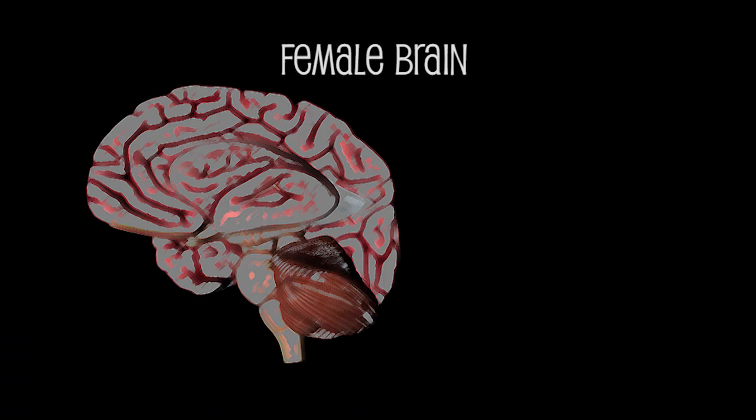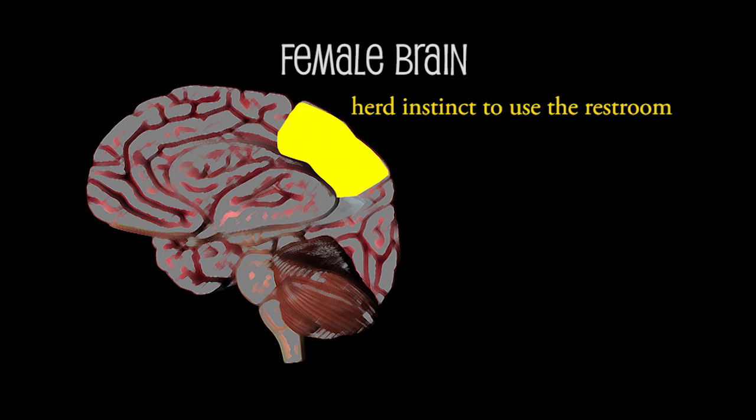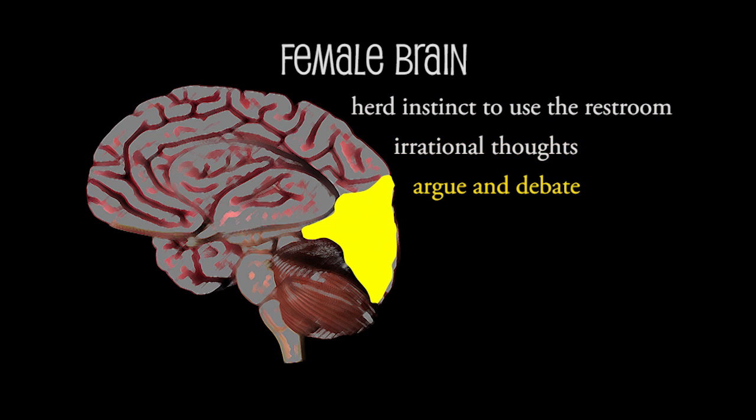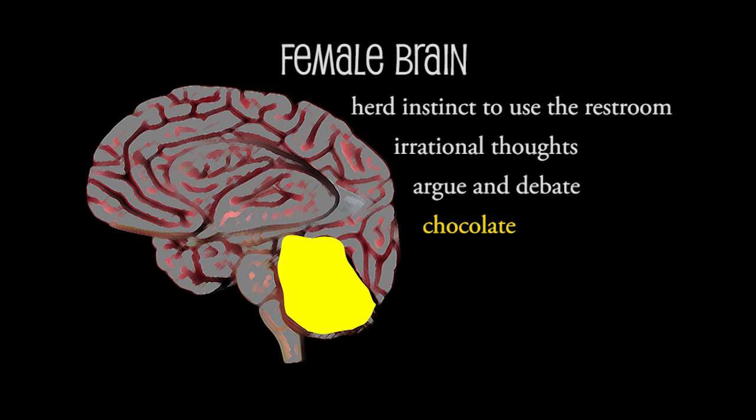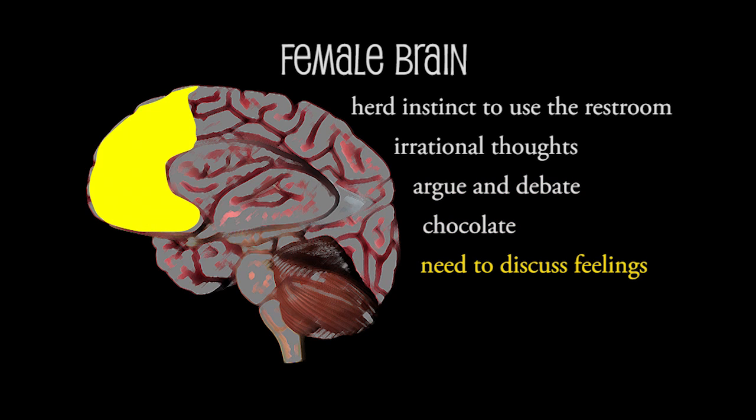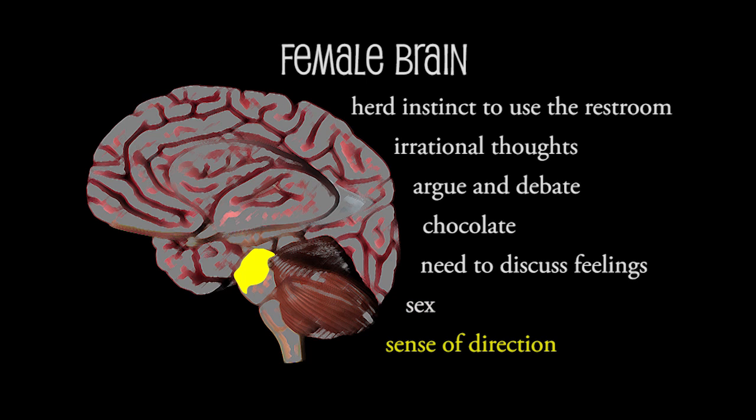Here's the typical female brain, non-invasive imaging with a cartoon MRI. There's the herd instinct to use the restroom together, the part responsible for irrational thoughts, the argue and debate lobe, the chocolate center, the need to discuss feelings nucleus, and the ever so small sex particle and sense of direction region.